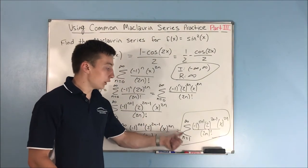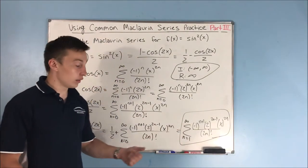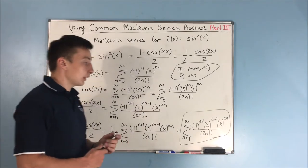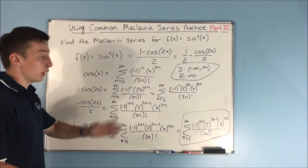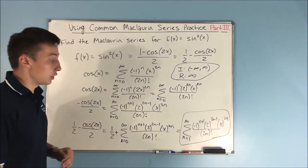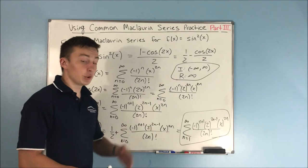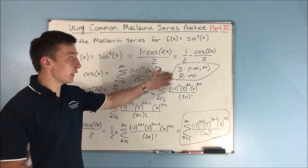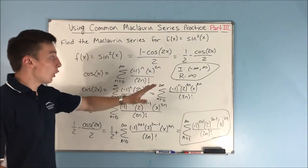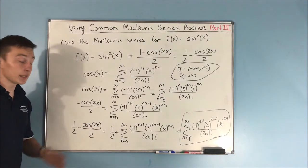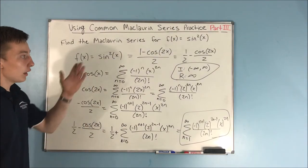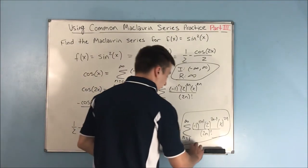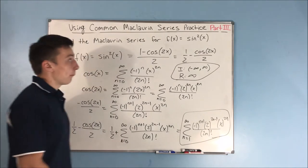The final answer is the sum from n equals 1 to infinity of negative 1 to the n plus 1 times 2 to the 2n minus 1 times x to the 2n over 2n factorial. The interval and radius of convergence are the same as cosine of x — an infinite interval with an infinite radius.